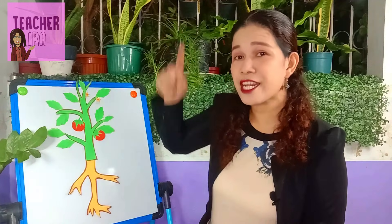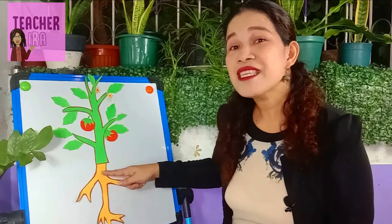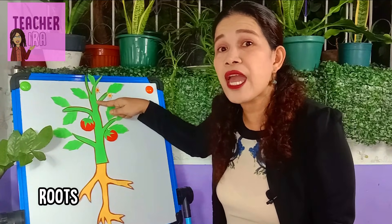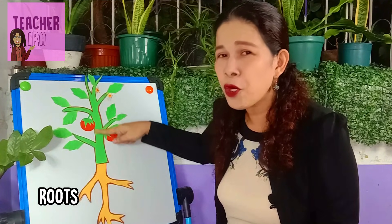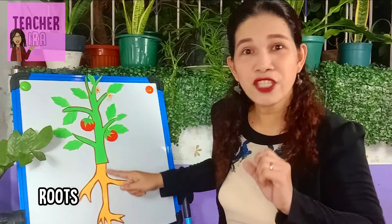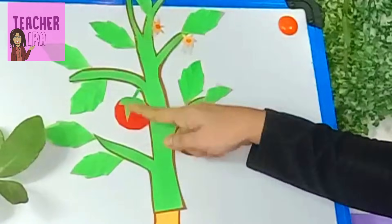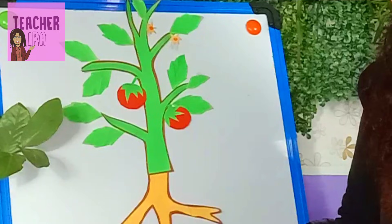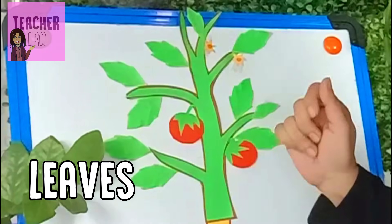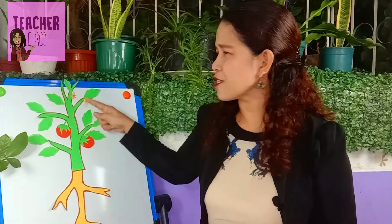Let us begin from down here — what do you call this? Yes, you are correct: roots. How about this part that carries all the water and minerals and holds the other parts of the plant? Correct, children — the stem. How about this part that makes food for the plant? You are correct again — we call these leaves.